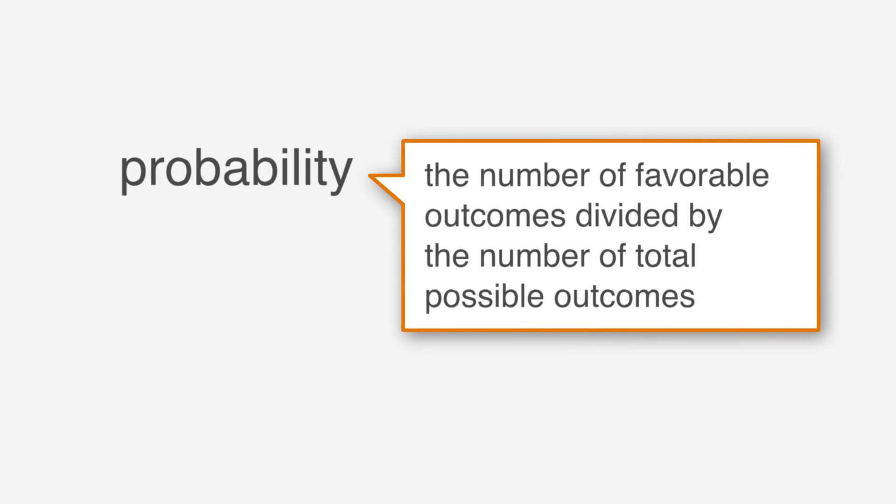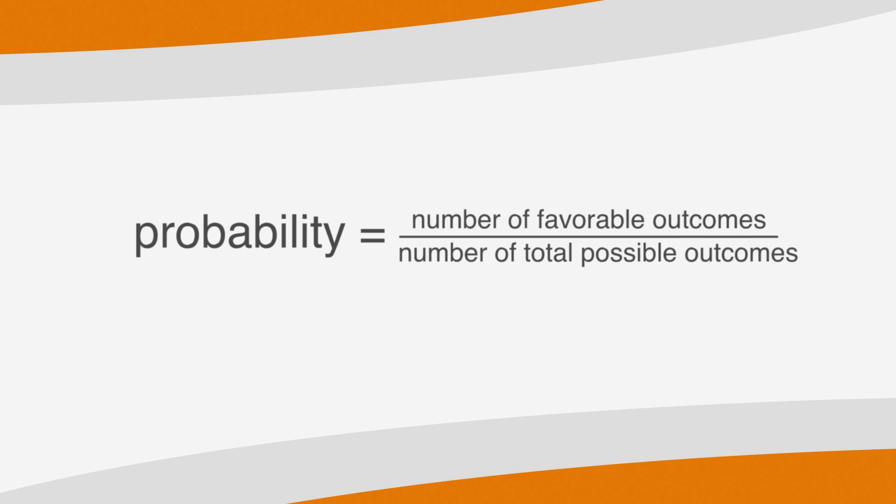First, let's look at the definition. Probability is the number of favorable outcomes divided by the number of total possible outcomes. This definition also works as a formula. The formula for finding probability is the number of favorable outcomes divided by the number of total possible outcomes.